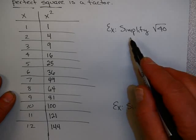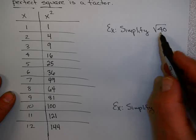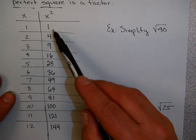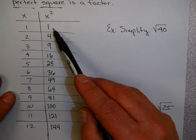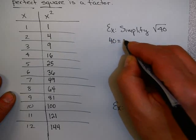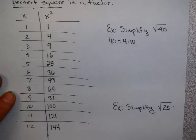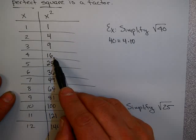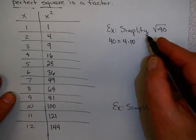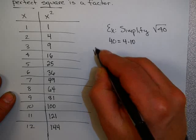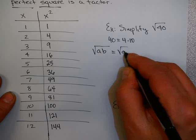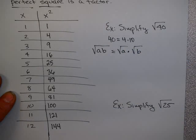And when you're given a question like simplify square root of 40, we're asking the question, which of these numbers divides 40? Well, certainly 1 does. But 1 is kind of boring. Let's keep going. 4 does. 40 equals 4 times 10. 9 does not divide 40. Neither does 16. Neither does 25. Neither does 36. And now we've gotten too big. So there is a property of square roots that the square root of something times something else, a times b, equals the square root of a times the square root of b.